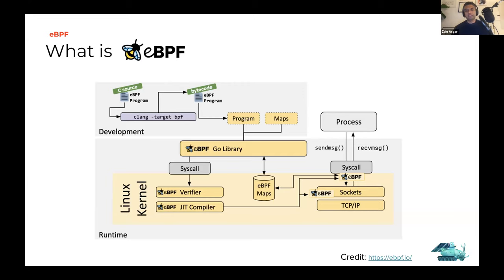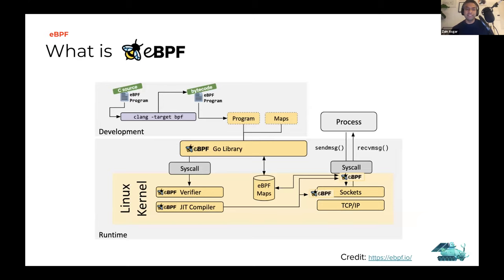Since eBPF is running in the kernel, you get access to most of the kernel data structures. You can do things like: get notified every time there's a syscall, monitor network traffic to enforce firewall-type filtering. One of the cool things eBPF can do is use uprobes — user space probes. That allows you to instrument programs running in user space so that you can inject some code into it to capture data.